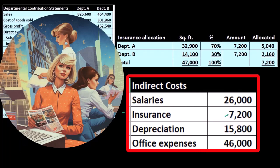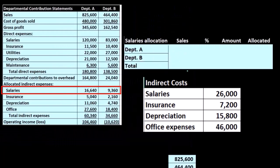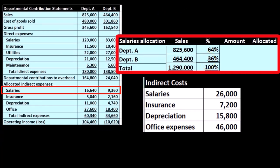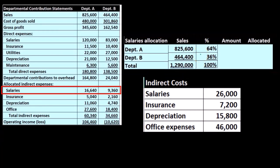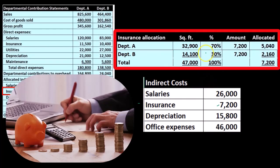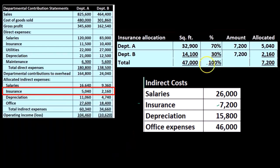We know the total but need to determine an activity base to break it out. We could have used sales, which would follow the same 64/36 pattern we used last time, but we decided that 64/36 breakout shouldn't apply to insurance. We think it's better to use the 70/30 based on square footage because square footage is a better cost driver — a better indicator of what the allocation should be.